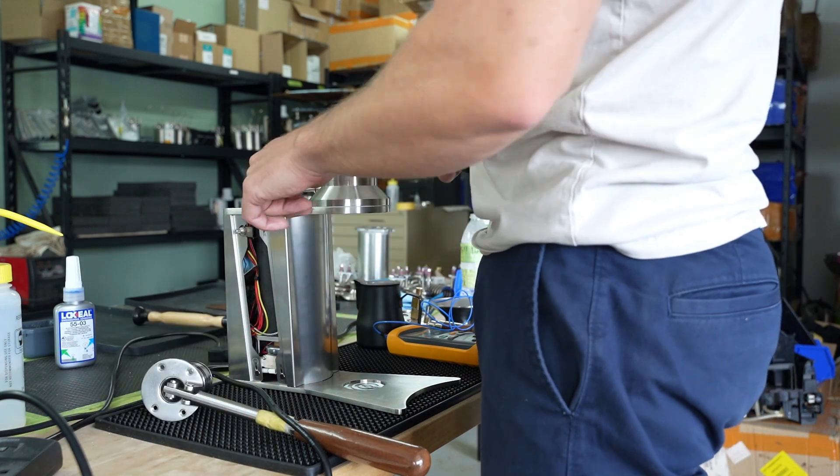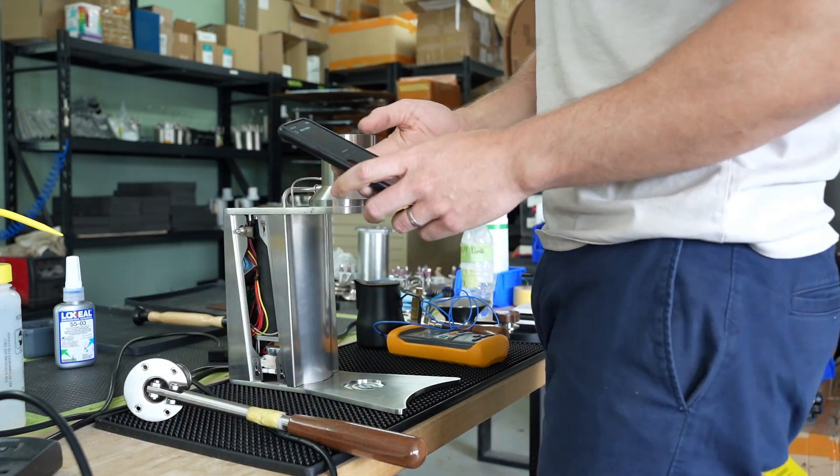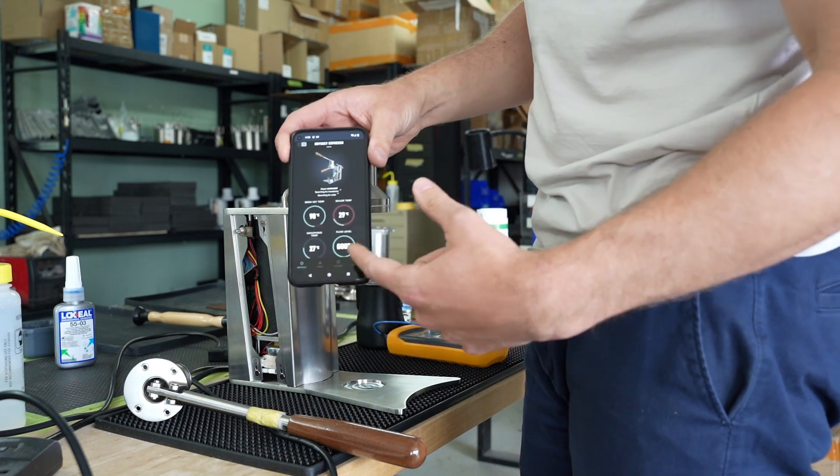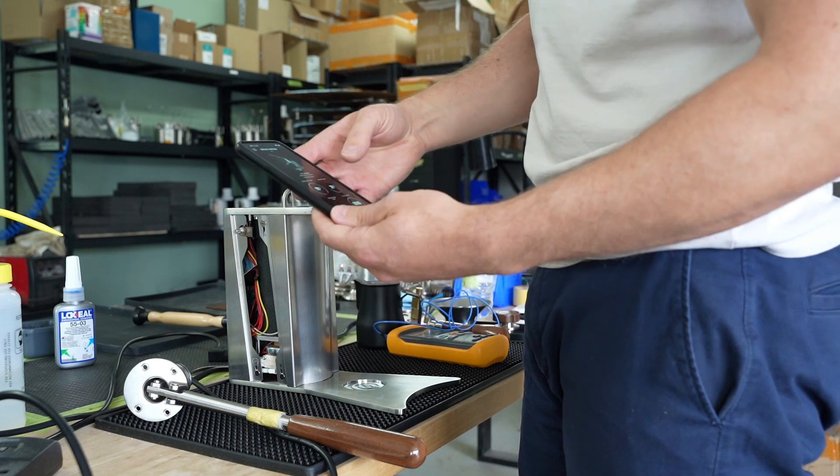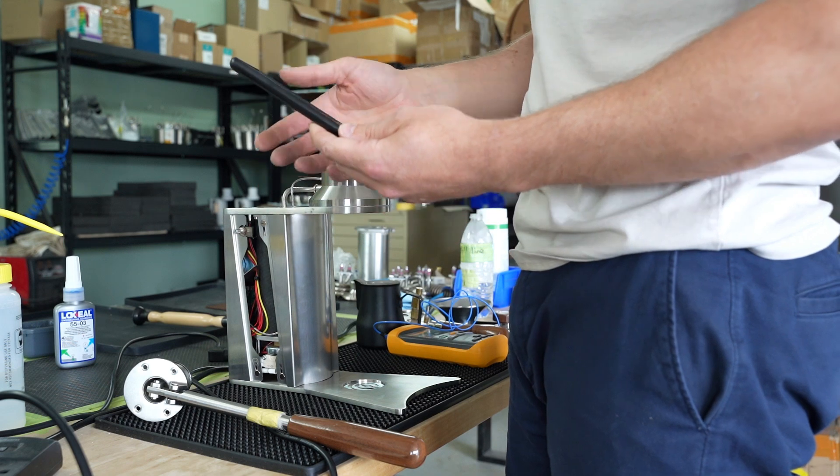We start off by turning it on, checking that all the LEDs work. I'll connect to it in the app, and I'll make sure that all of the temperatures are working correctly, all the fluid probes are good. I can even go in and check that I've got the latest version of the firmware.